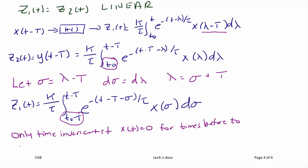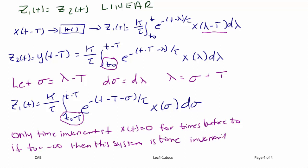The other condition under which the system is time invariant is if t_0 equals negative infinity. Essentially, we can say the system is time invariant as long as we know something about the initial conditions. If we don't know where t_0 starts or what x(t) is before t_0, we cannot say it is time invariant. This concludes today's lecture on linearity and time invariance.